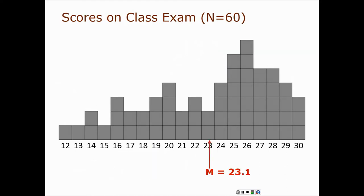Let's look at this example. The mean of these scores — each block is one individual — so there are 13 people who got 16 on a class exam, two people who got 21, 7 people got 26, and so on. The mean of that distribution is 23.1. The median is 24.5. There are the same number of observations above 24.5 as below it — 25 and above versus 24 and below. The halfway point between 24 and 25 is 24.5, and this appears to be discrete data with whole numbers, so 24.5 is a good place to put the median value.